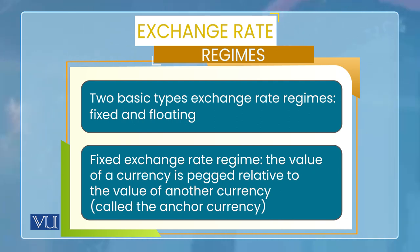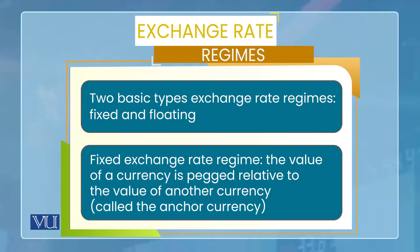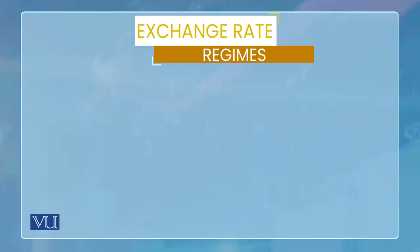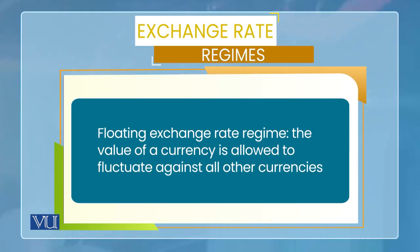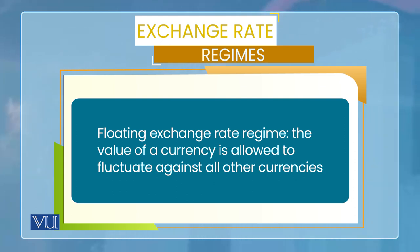Fixed exchange rate regime کا مطلب ہے کہ کسی currency کی value کسی اور currency کی terms میں fix ہو جاتی ہے — یعنی وہ دوسری currency ایک nominal anchor بن جاتی ہے اور آپ اپنی currency کو اس سے link کر دیتے ہیں۔ جبکہ floating exchange rate regime میں market conditions میں demand and supply سے exchange rate determine ہوتا ہے اور جیسے جیسے market conditions change ہوتی ہیں، exchange rate accordingly fluctuate کرتا رہتا ہے۔